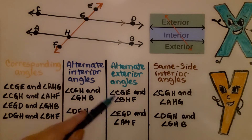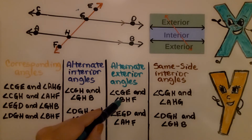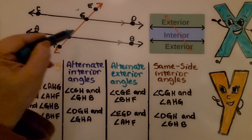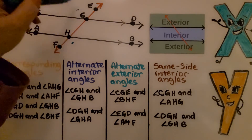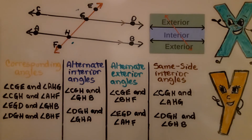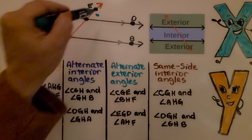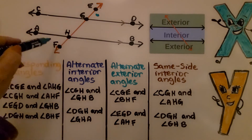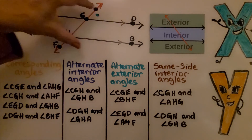For alternate exterior angles, we have angle CGE and angle BHF — on the exterior of the parallel lines on opposite sides of the transversal. The other pair is angle EGD and angle AHF — also on opposite sides of the transversal on the exterior.